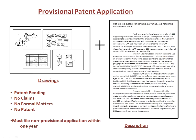A provisional patent application is a set of drawings and a description of an invention. There are no claims filed, no formal matters, and the application is never examined and can never become an issued patent. It simply establishes a filing date for the invention described.